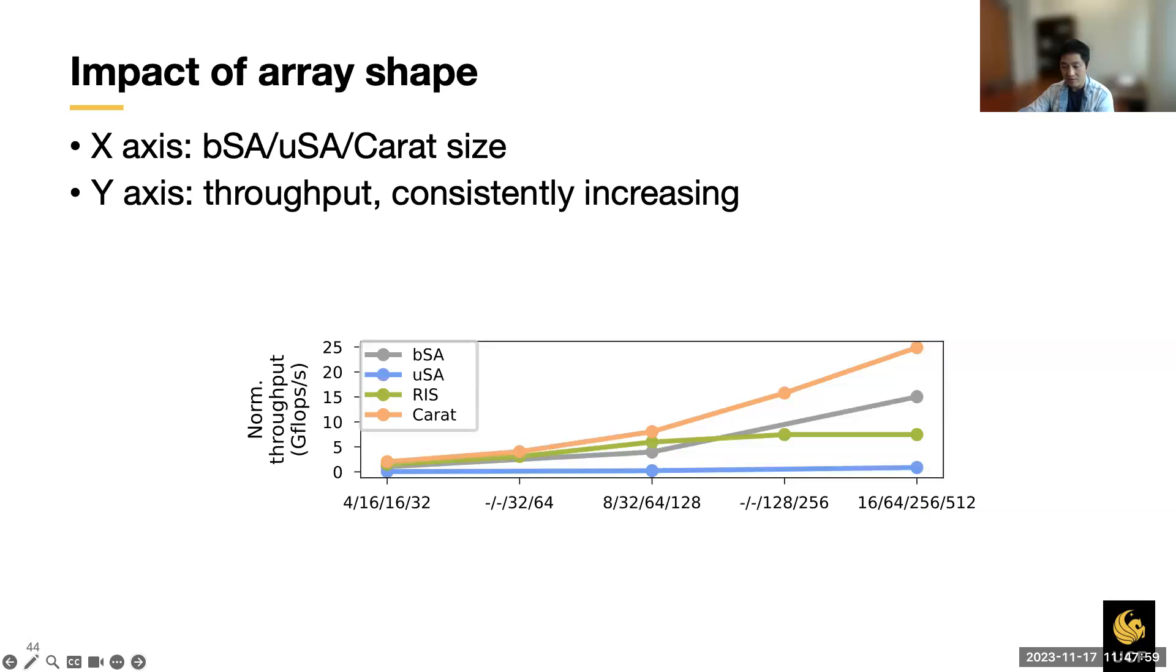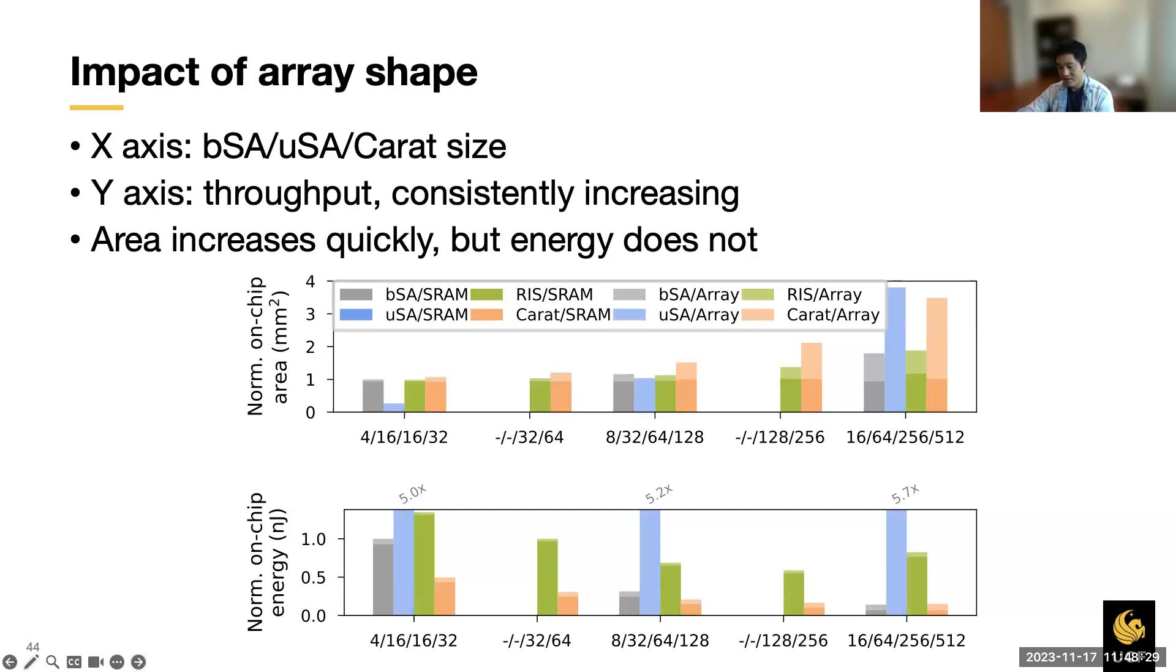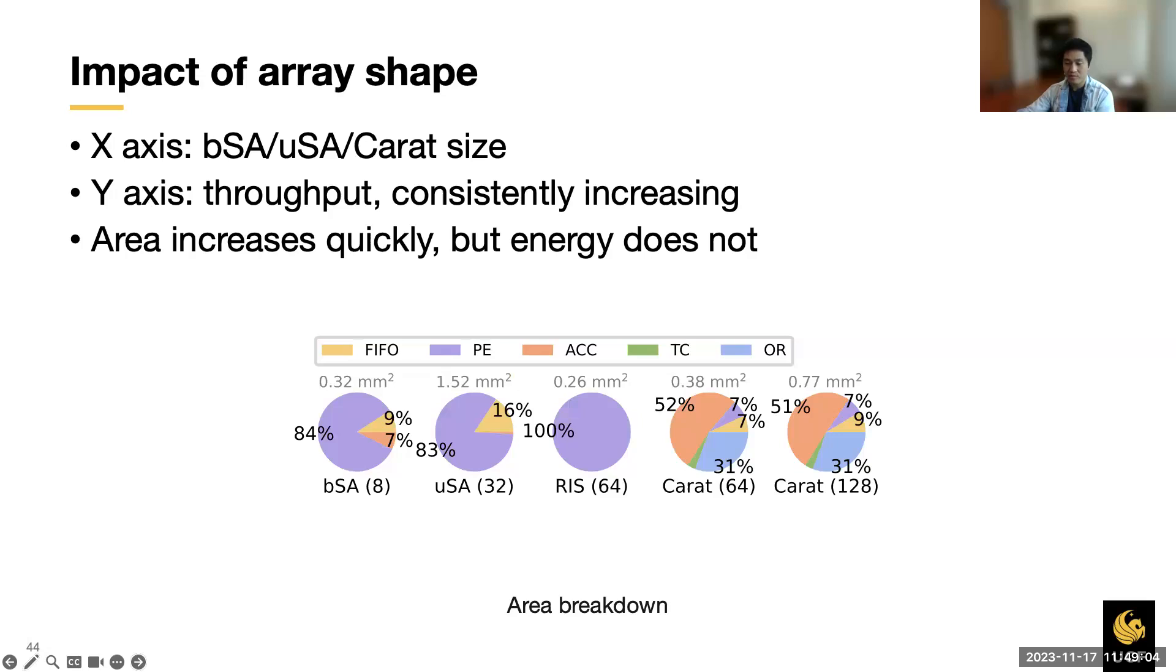Next, we examine whether VLP lives up to its promise and improves the efficiency by varying the array size of different designs. The figure here shows that when scaling up the array size, the throughput of all designs increases and Caret always outperforms others. Then we show the comparison of the area and energy below. When increasing the array size, the Caret area increases quickly, while the energy does not. The main source of the area overhead is the input FIFO in Caret. However, due to the long cycles of temporal signals, large FIFOs leads to marginal energy overhead. This means that Caret with VLP indeed offers energy efficiency benefit over conventional GEMM architectures.